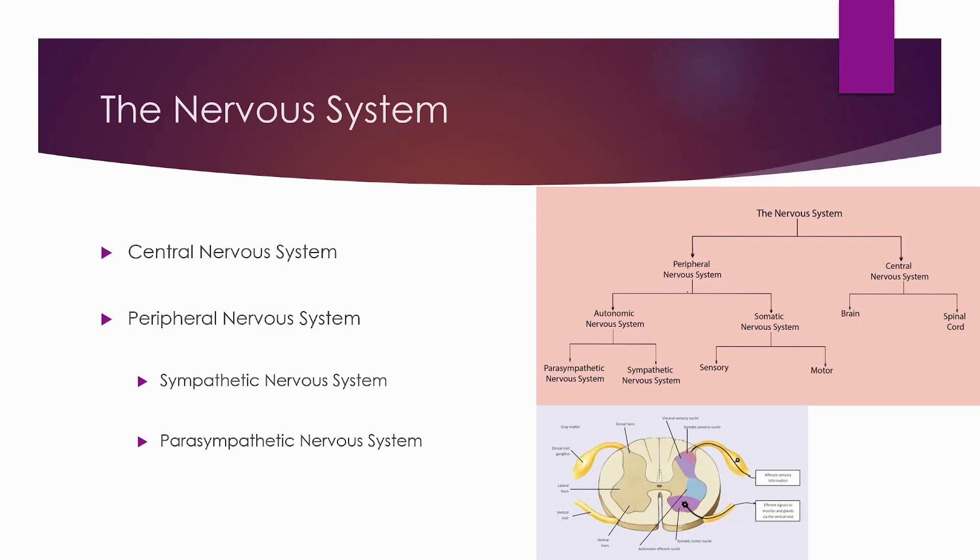The peripheral nervous system gets a bit more complicated as it splits off into the somatic nervous system, which is our voluntary movements. That also gets split off into sensory and motor, as well as the autonomic nervous system, which will split off into the sympathetic nervous system and parasympathetic nervous system.